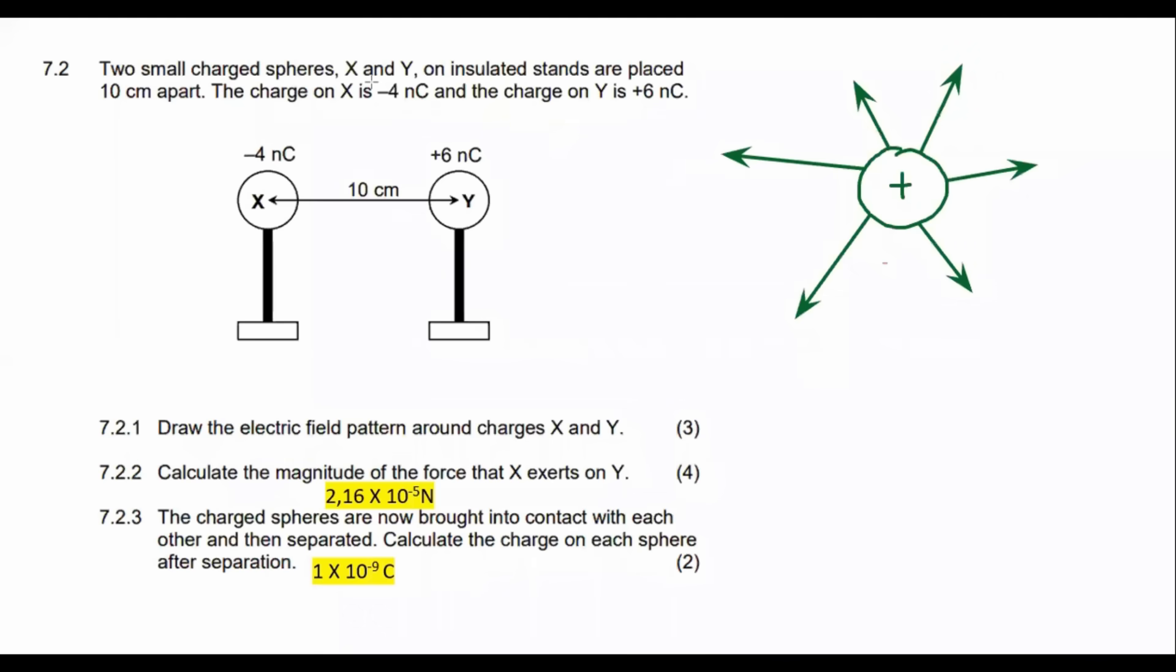And if you have something that is negative, then the electric field lines will always point towards it. Like that. So yeah, that's pretty much what we need to understand.